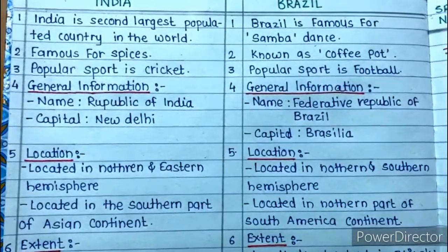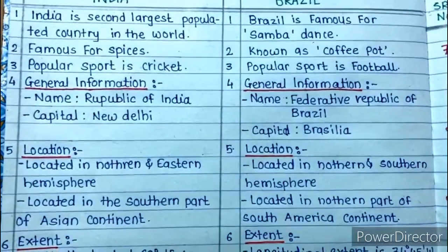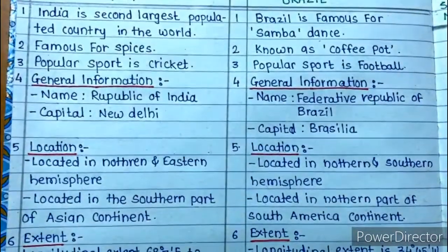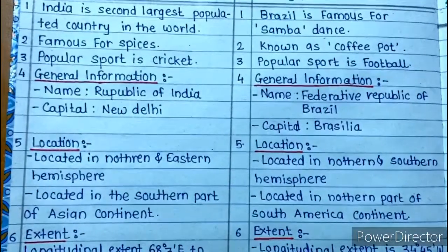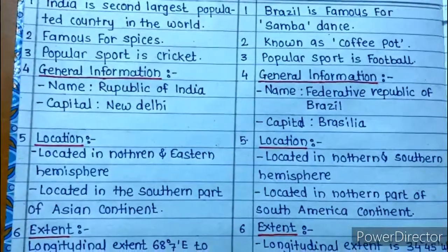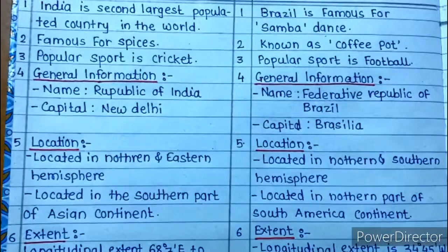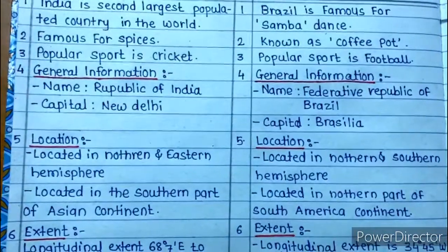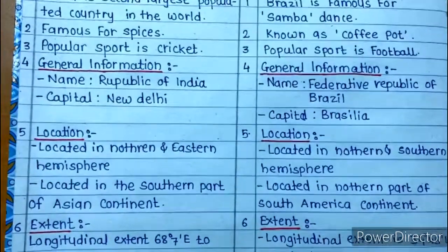The official name of India is the Republic of India, while the official name of Brazil is the Federative Republic of Brazil. The capital of India is New Delhi, whereas the capital of Brazil is Brasília.